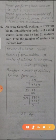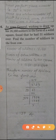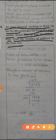Question 6, student this is the last question of this worksheet and this chapter also. An army general wishing to draw up his 16,160 soldiers in the form of a solid square found that he had 31 soldiers over. Find the number of soldiers in the front row.